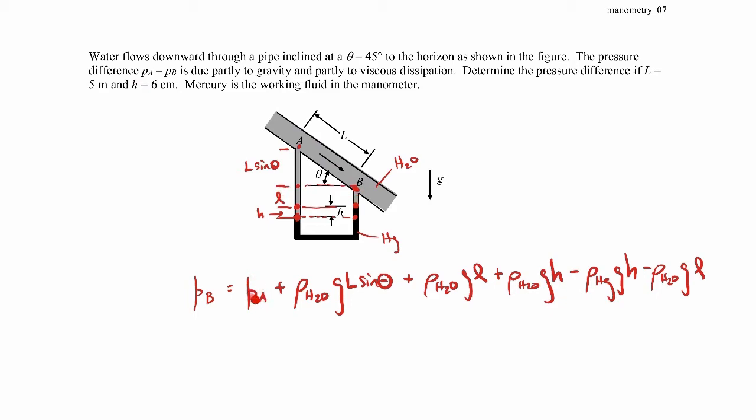So again, start at the pressure at A, add in the weight of the water over L sine theta, add in the weight of the water over distance little l, add in the weight of the water over distance H. Move laterally because I'm in mercury, then move upward through the mercury a distance of H, subtracting out the weight of the mercury. Then I'm back in the water, subtracting out the weight of the water over distance little l. And you'll see that these terms cancel one another out. You didn't really need to know that little l value anyway.